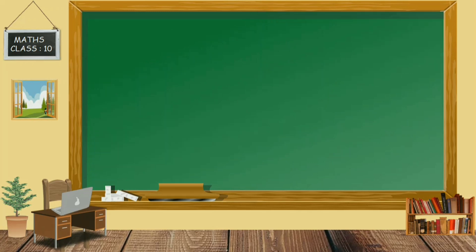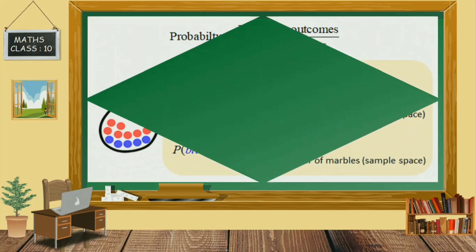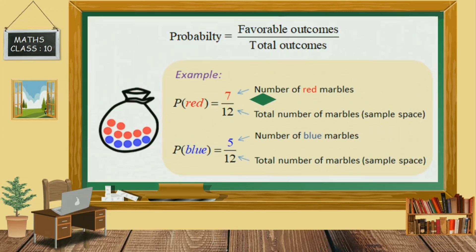That will be 1 by 2. Consider one more example: a bag contains some red marbles and blue marbles. You have to find the probability of red marbles and also the probability of blue marbles.